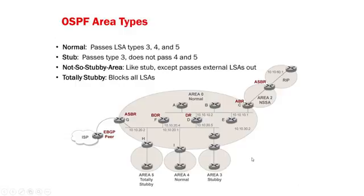The stub area is for, say, a small office — or let's say you're a retail operation with multiple stores. Those stores don't necessarily need to talk directly to each other; they need to talk to the backbone. So they need a summary route and a default gateway, but they don't need to know each individual store route, and they don't have external routes. They don't have an autonomous system boundary router or another router doing redistribution from another link. Those would be stub areas.